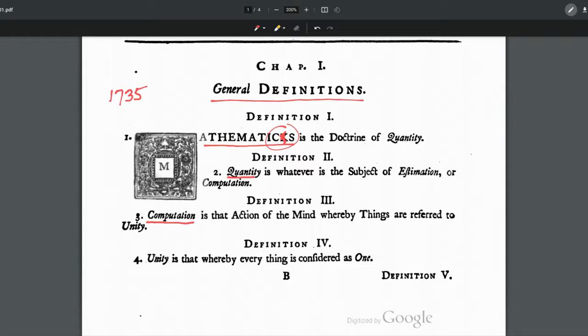We learn that computation is the action of the mind. Computation is something that happens naturally in men and women. We naturally perform the action of computation. It's not something that we learn to do in school. It's something that we do naturally. Computation is that action of the mind whereby things are referred to unity.